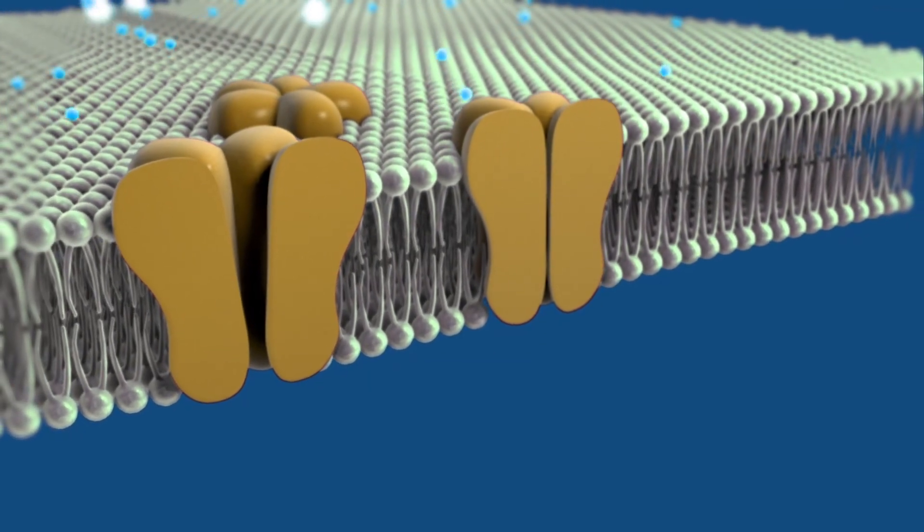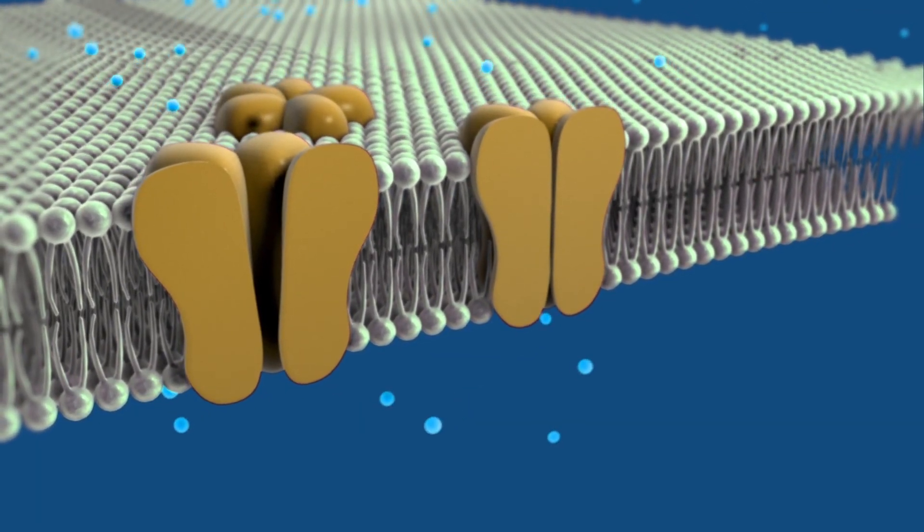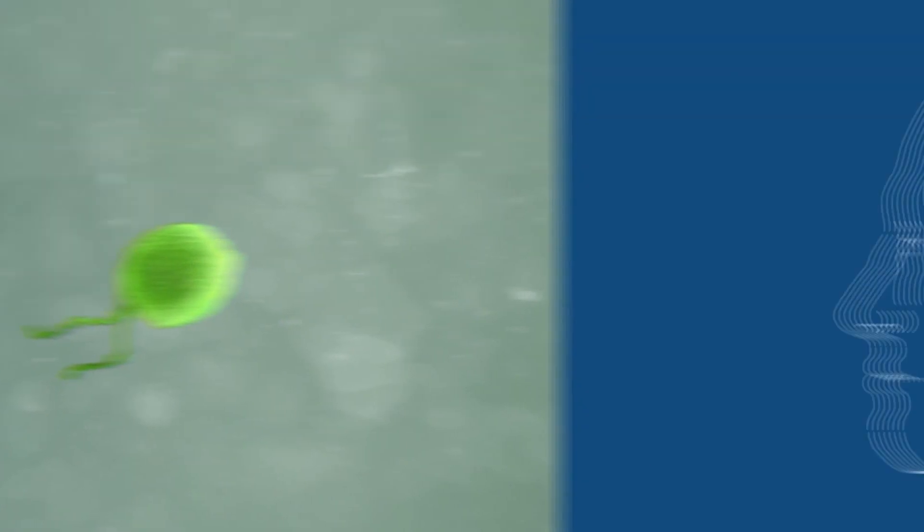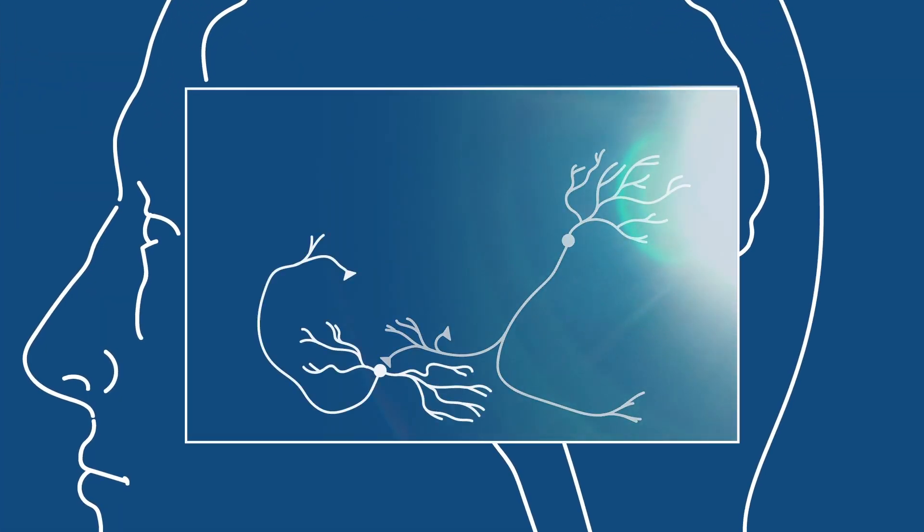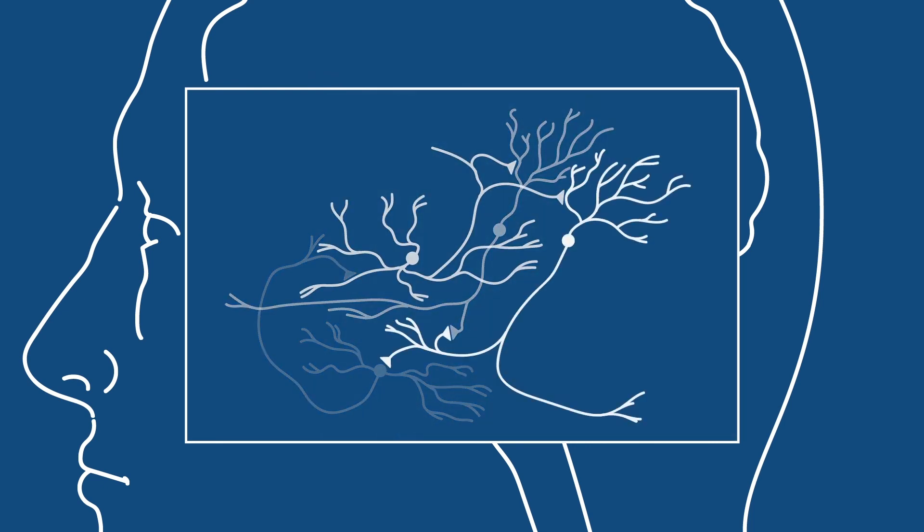When scientists revealed channel rhodopsins as the secret behind pond scum, they found an innovative way to investigate the brain's many mysteries. Further research and exploration could also one day help develop treatments for people suffering from Parkinson's disease and other neurological diseases.